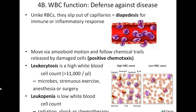Unlike red blood cells, white blood cells can slip out of capillaries — a process called diapedesis, where leukocytes squeeze between endothelial cells of blood vessel walls and migrate to the site of an infection. Leukocytes also have chemotaxis — they are tracked to sites of infection by molecules released by damaged or dead cells, or by pathogens. Substances such as histamines attract these leukocytes.